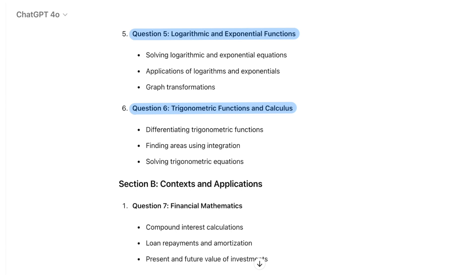Question 7: Financial mathematics. Key areas for this question are compound interest calculations, loan repayments and amortization, and present and future values of investments.